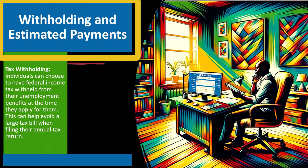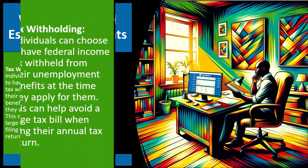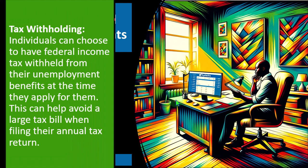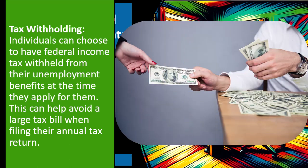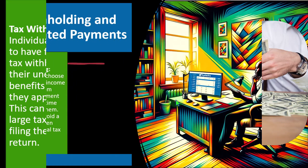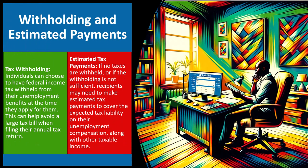Regarding withholding and estimated payments: individuals can choose to have federal income tax withheld from their unemployment benefits when they apply. This can help avoid a large tax bill when filing their annual tax return. The question of how much to withhold can be answered by running an actual estimate.